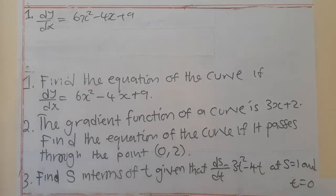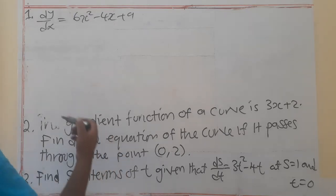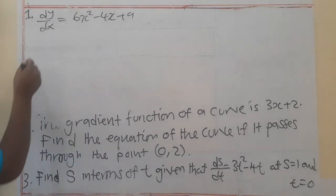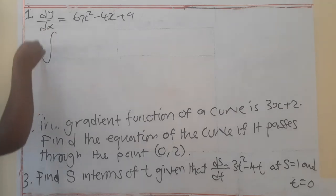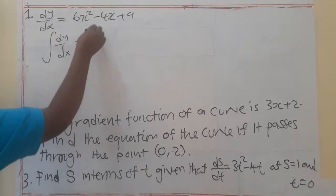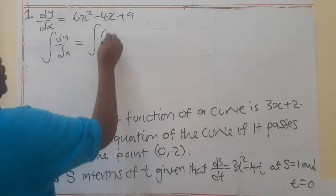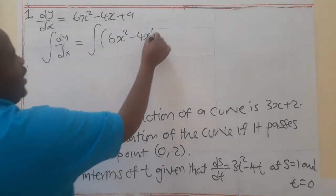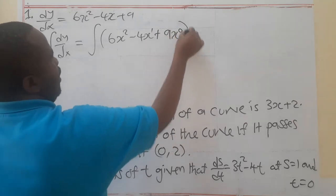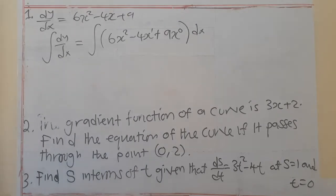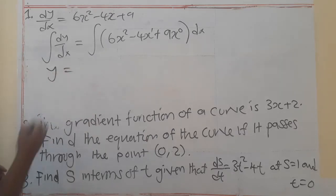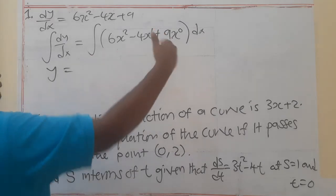To find the equation, we are going to integrate both sides. So we integrate dy/dx, and on the right side we integrate 6x squared minus 4x to the power 1, plus 9x to the power 0, everything with respect to x. Note that 9 is the same as 9x to the power 0. When we integrate the left side, we simply remain with y.